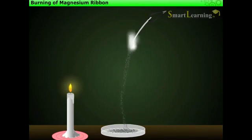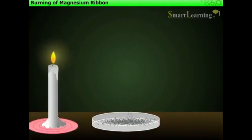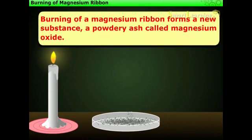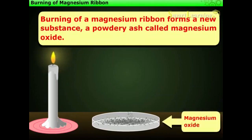Once it burns completely, we obtain a powdery ash. We can notice that burning of magnesium ribbon forms a new substance, a powdery ash called magnesium oxide.